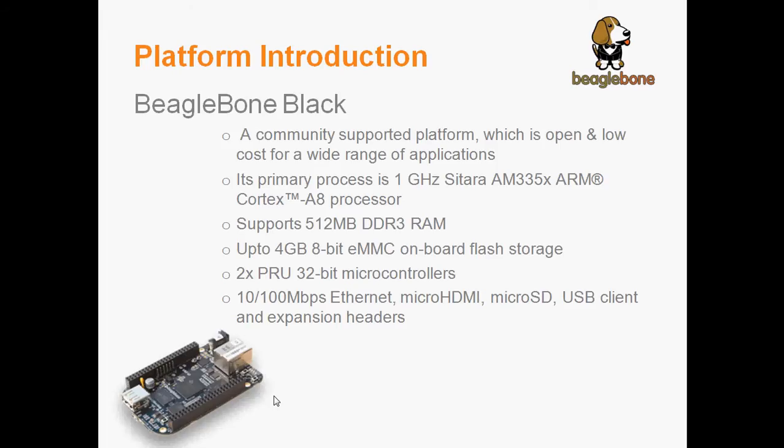Let us look at the platform I'll be working on, the BeagleBone Black. It is an embedded platform that hosts a 1GHz ARM A8 processor and 512 MB of DDR3 RAM, which means it can run various flavors of Linux and some versions of Android. It has up to 4 GB of onboard flash storage and two 32-bit microcontrollers known as PRUs or Programmable Real-Time Units. It also has other peripherals including an Ethernet port, micro HDMI and micro SD slots.